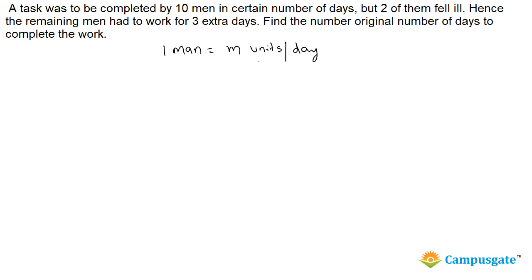If one man's capacity is m units per day, therefore 10 men's capacity will be 10m units per day. Let us assume that they plan to complete this job in d days, therefore the total work equals 10m multiplied by d.